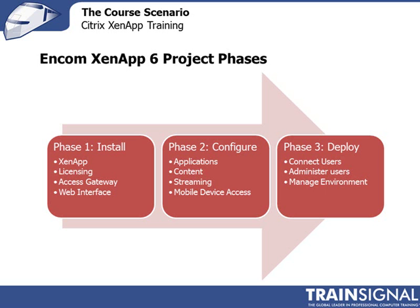Phase two, we're going to move into configuration. We're going to configure published applications and streamed applications. We're going to publish content and publish desktops. We're going to take care of all aspects of applications and address applications of different sizes and requirements differently. We're also going to configure mobile device access using the access gateway.